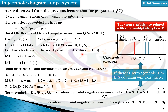Taking the most positive value, for example, mL1 = +1 and mL2 = 0, the total ML value is 1. We ignore the negative values since they are not the highest. This is a repetition of the pigeon hole diagram approach. The total S values are 1 and 0, so the total multiplicities will be triplet and singlet.